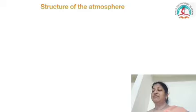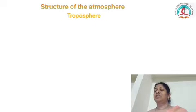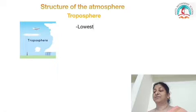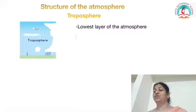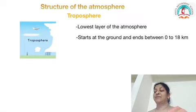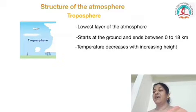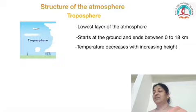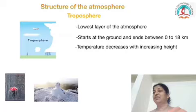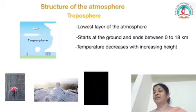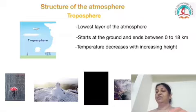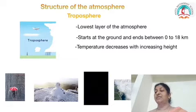Troposphere: this is the first and lowest layer of the atmosphere. It starts at the ground and ends somewhere between 0 to 18 km. Here the temperature decreases with increasing height and hence it is called the weather making layer. Weather phenomena like rain, snow, thunder and storm occur here. The upper limit of the troposphere is called the tropopause.